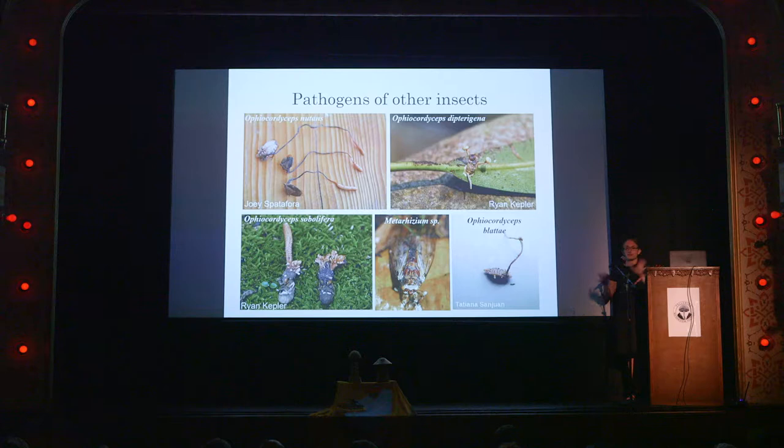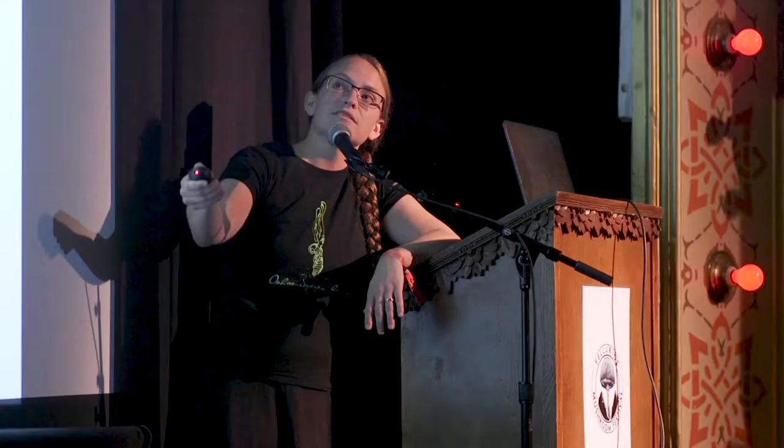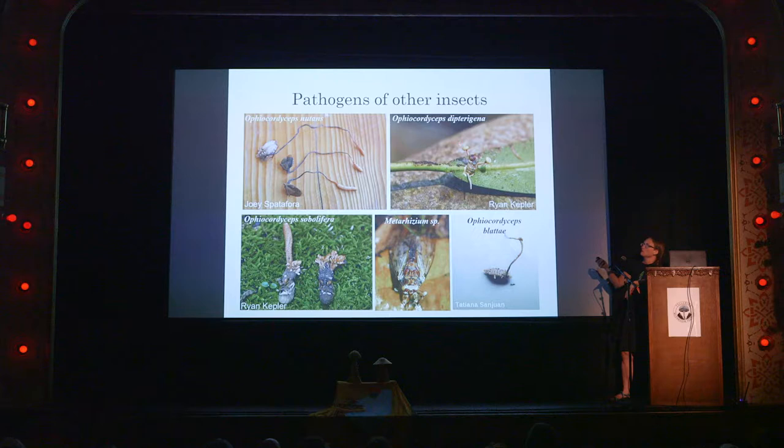There are also pathogens of other insects — cicadas, including cicada nymphs attacked by Metarizium, and other hemipteran bugs, including stink bugs. Ophiocordyceps nutans is one of the most common cordyceps you'll find in Asia. There are fly pathogens — Dipterigena — which always produces fruiting structures in pairs on the underside of a leaf. There are also cockroach pathogens and phasmid pathogens, like stick bugs. There's a lot of host diversity and therefore diversity of the cordyceps we see.